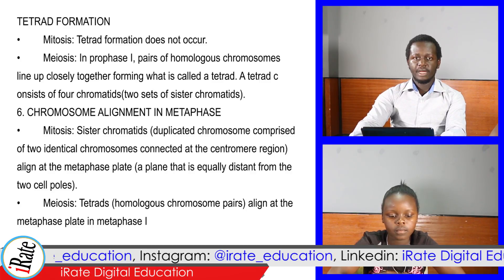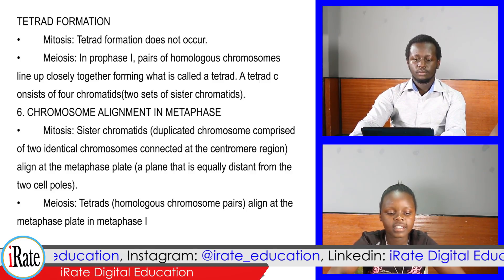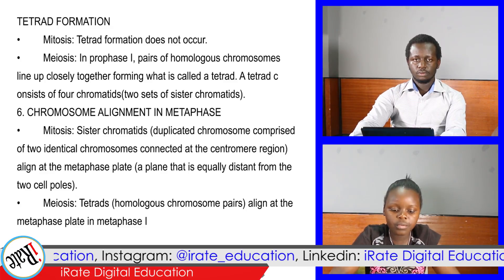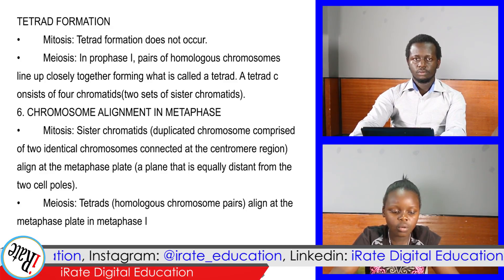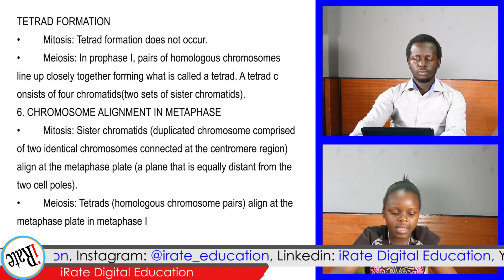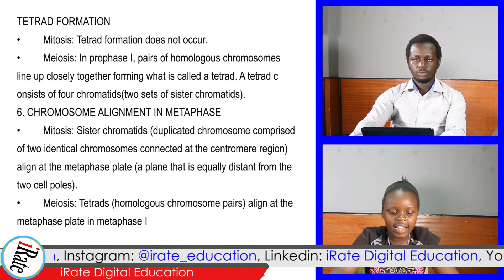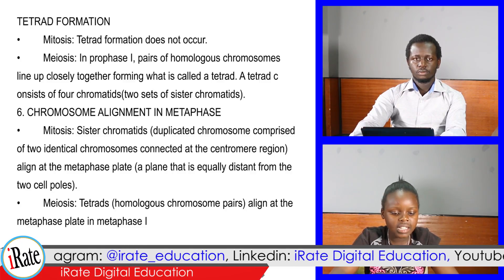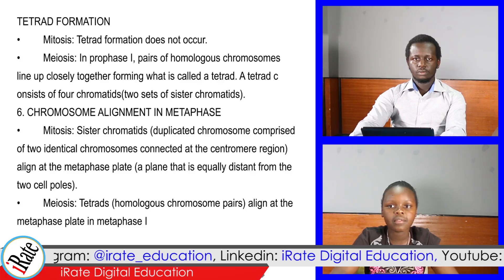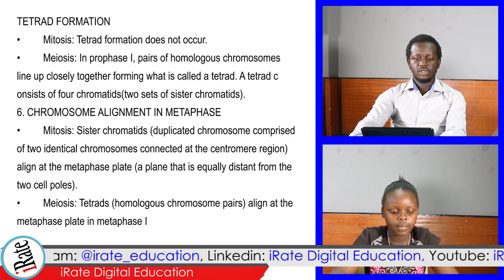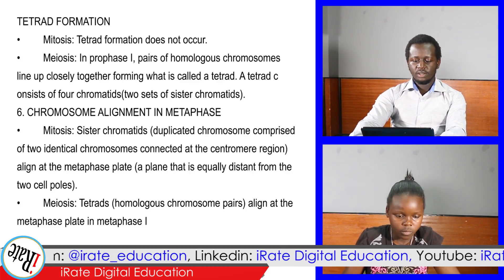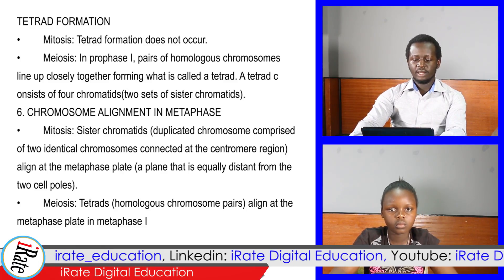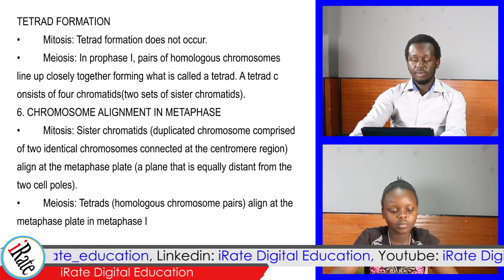Point 6: Chromosome alignment in metaphase. In mitosis, sister chromatids — that is, duplicated chromosomes comprised of two identical chromosomes connected at the centromere region — align at the metaphase plate, that is, a plane equally distant from the two cell poles. In meiosis, tetrads — that is, homologous chromosome pairs — align at the metaphase plate in metaphase I.